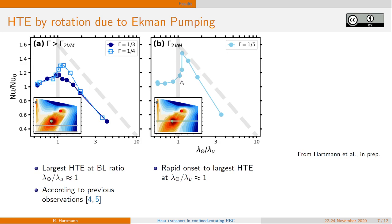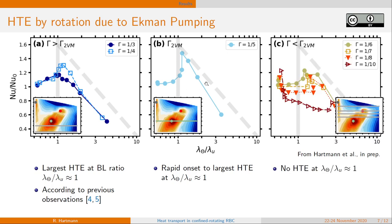And proceeding even further to smaller aspect ratios, we do not see any heat transport enhancement anymore at boundary layer ratio of approximately one. We just observe it later for larger boundary layer ratio. And this is also including the single vortex maximum. So the remaining question now is what causes this late heat transport enhancement for the small aspect ratios? May the Ekman pumping not be valid there anymore?